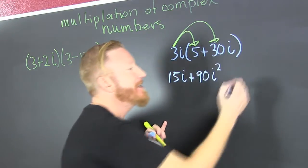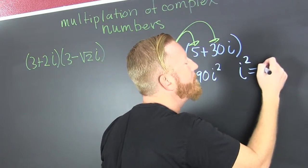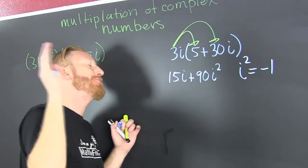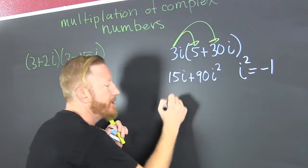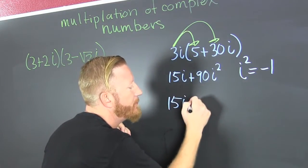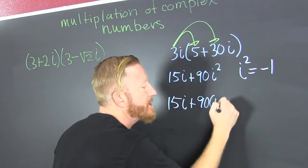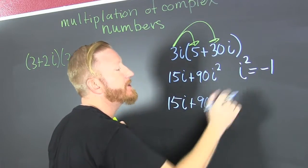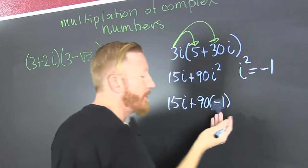That's the only new part that says i squared is equal to minus one. Oh boy! Finish him. That's 15i plus 90 times i squared. But that evaluates to minus one.